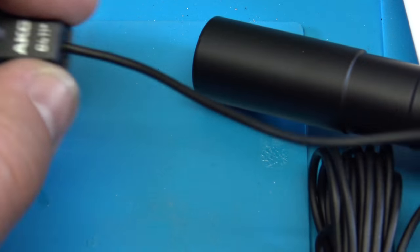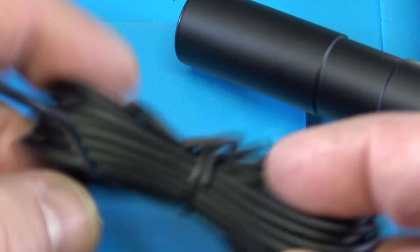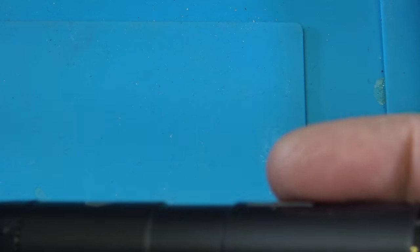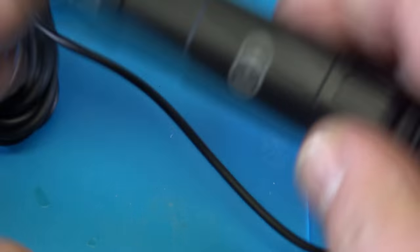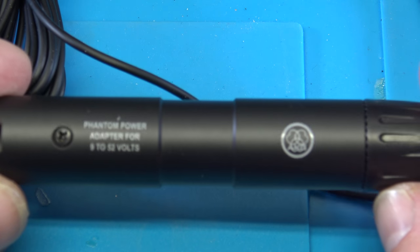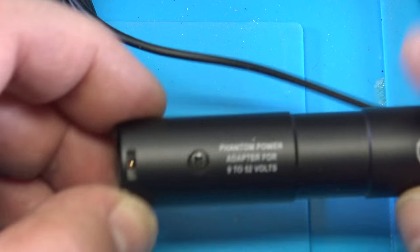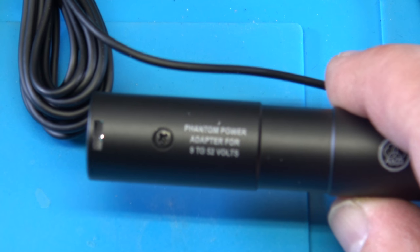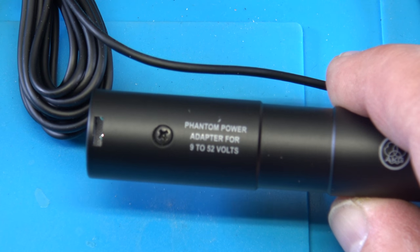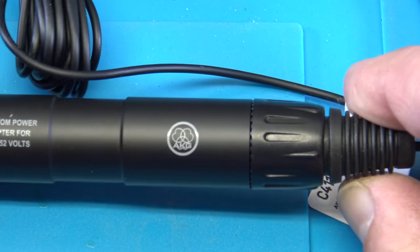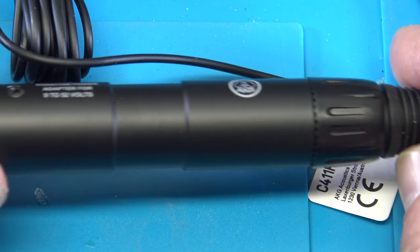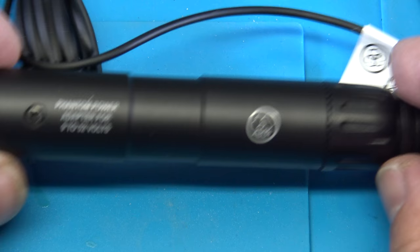Right. Okay, then the wire and then this thing here. Let me turn this around so you can see the writing. I need to focus better. This is a phantom power adapter for 9 to 52 volts. So this is how it looks like.